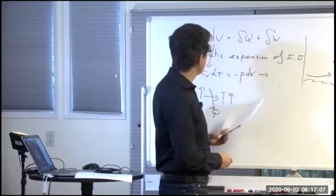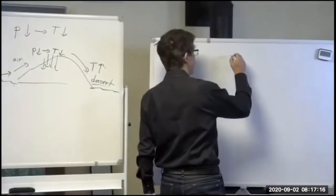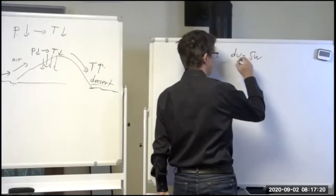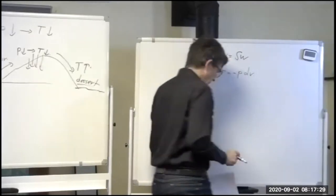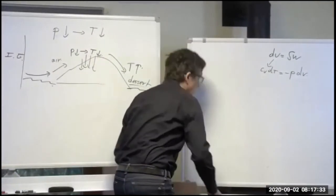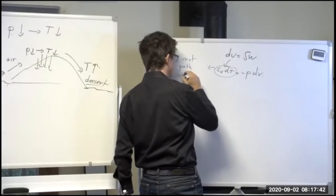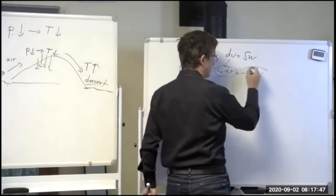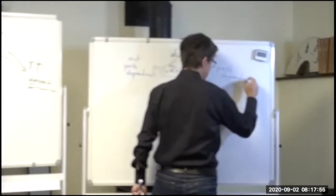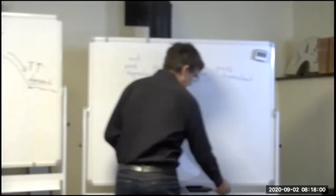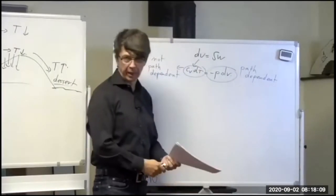I want to go back to this adiabatic expansion because we made a few assumptions I want to go deeper into. When I write dU equals dW, which is true for adiabatic, and then write CvdT equals minus PdV — remember that dU is an exact differential, so it's not path-dependent, but dW is path-dependent. So how do I really know what path the process took?